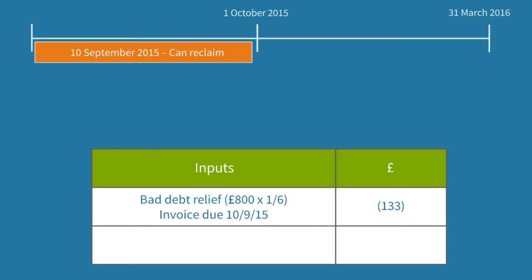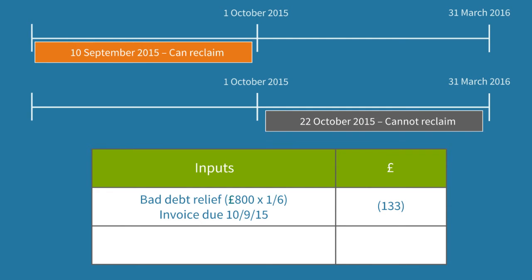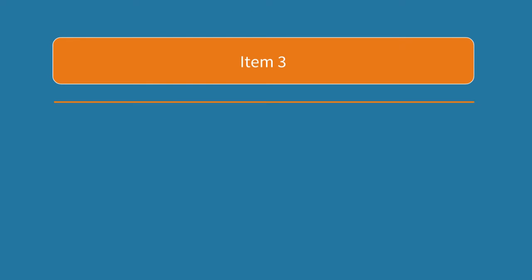We'll put our inputs in brackets to make it clear that these are deducted from outputs. For the second bad debt, this was due on 22nd October 2015, which is not over six months overdue at 31st March 2016, so we cannot reclaim bad debt relief. We include this item as a zero because we were instructed to include all items even if they are zero.